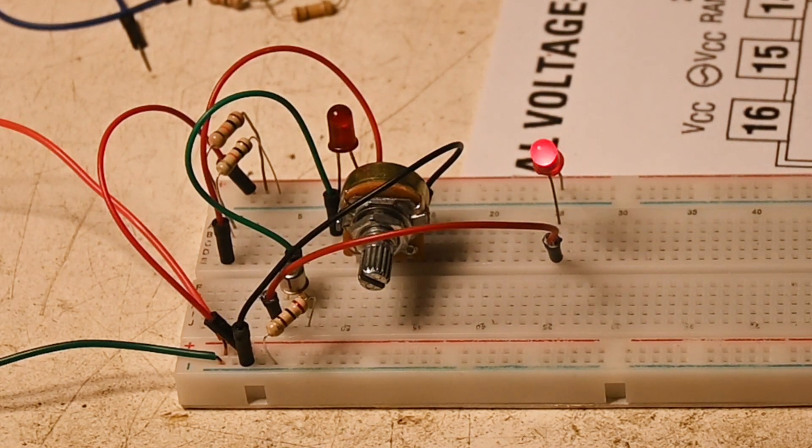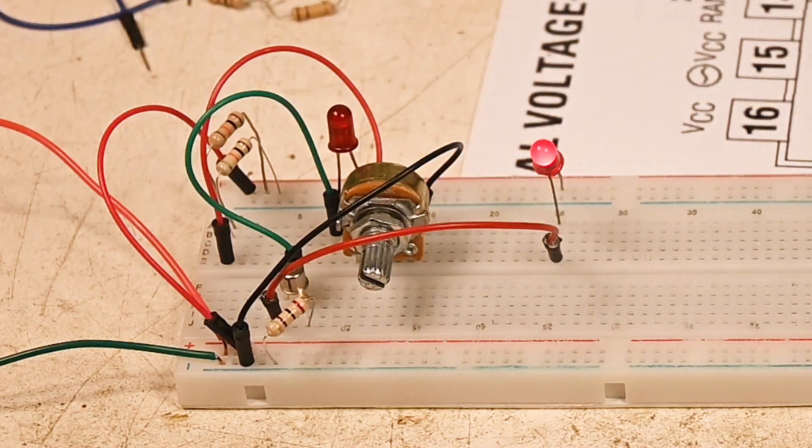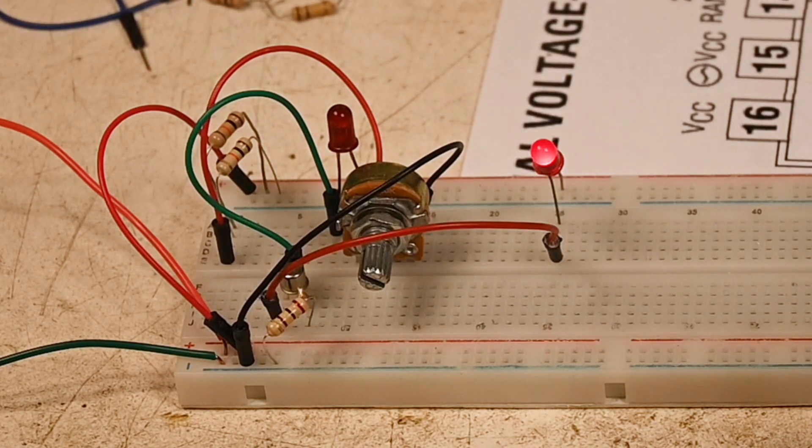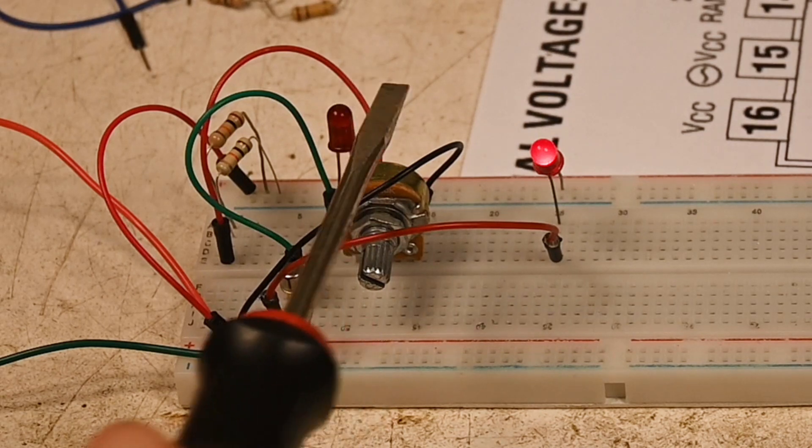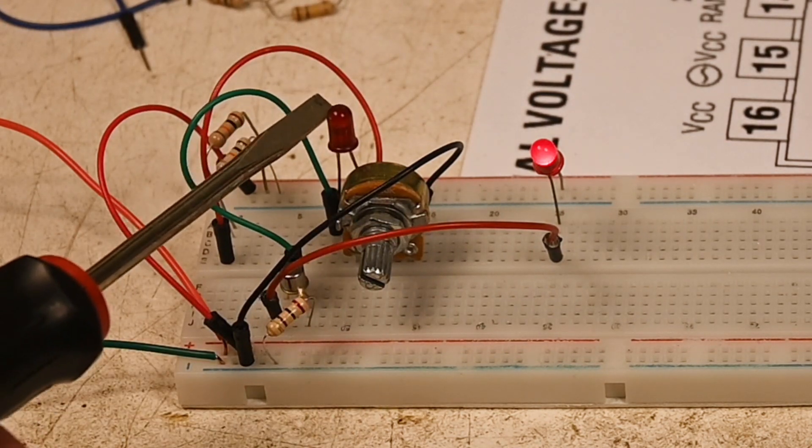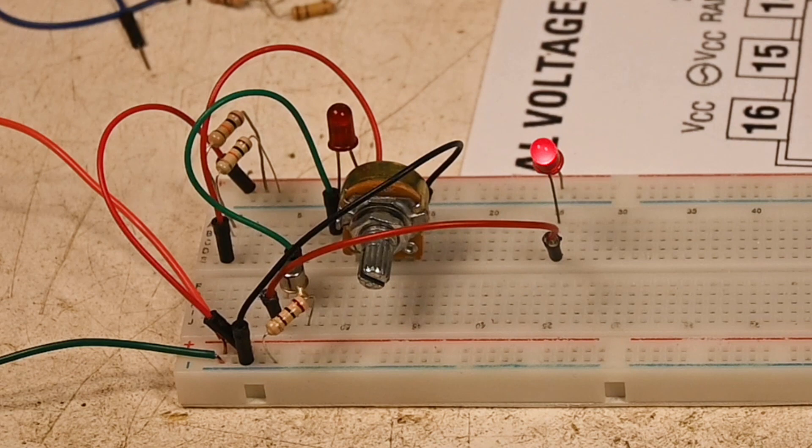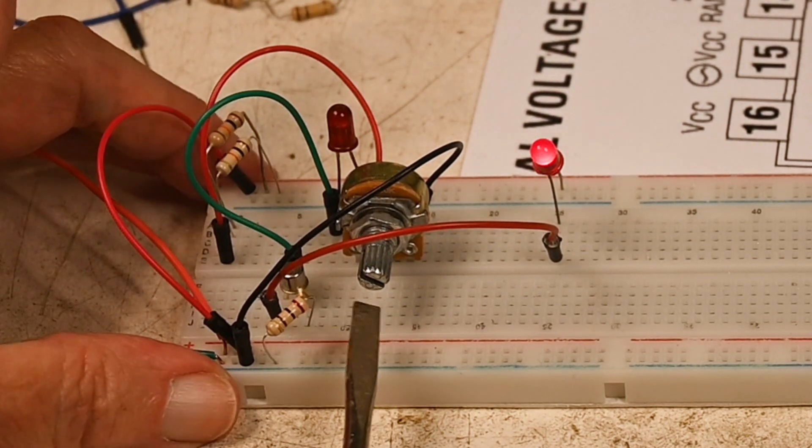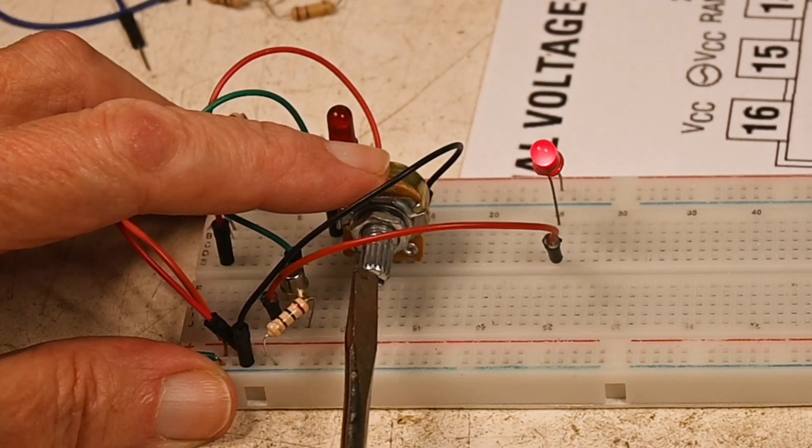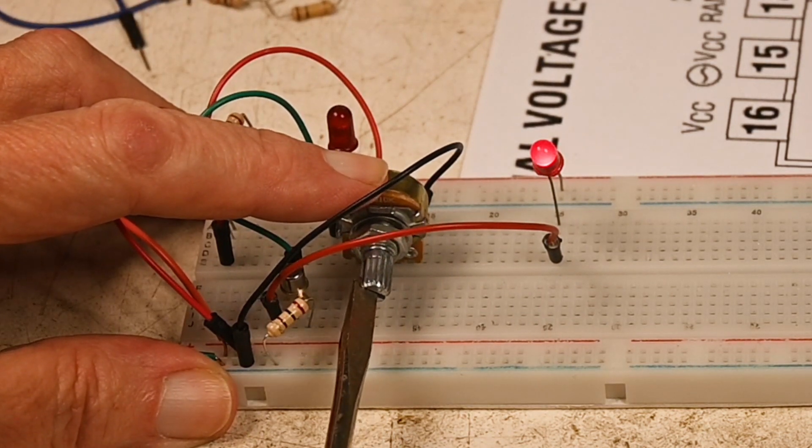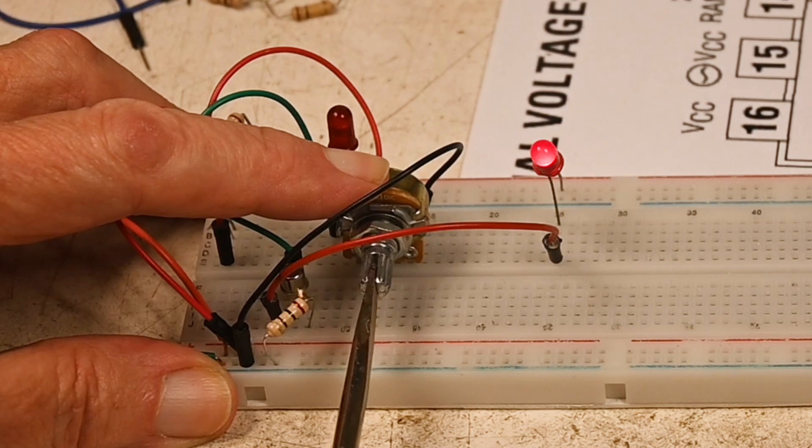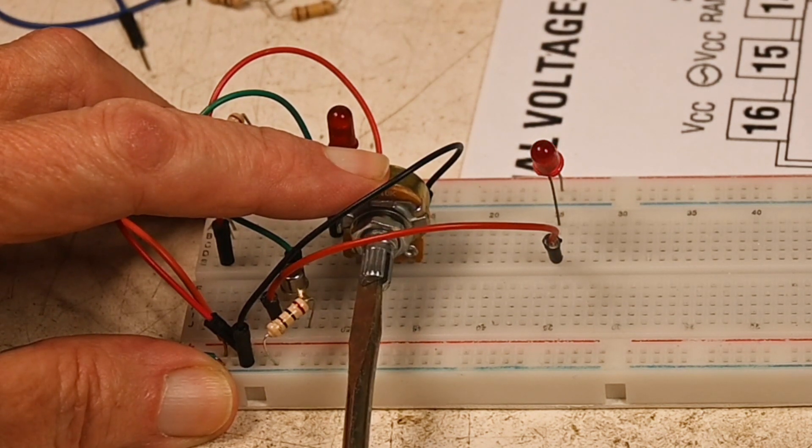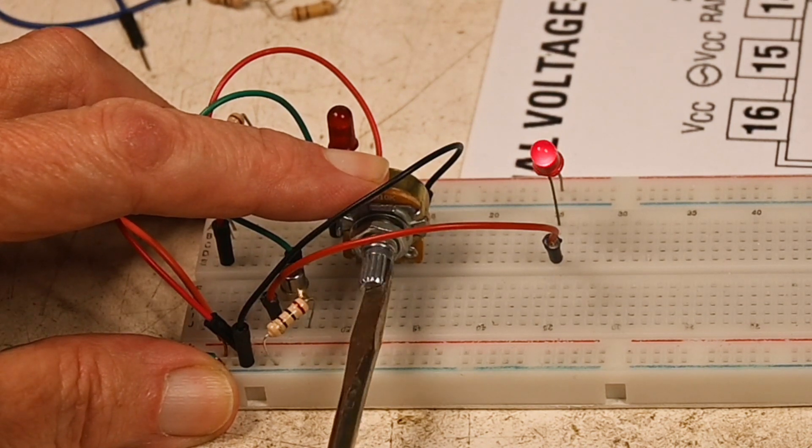So what that means is there's not enough current going through this LED to light it up, but there is enough current going through that LED to allow the transistor to control the LED on the right side.